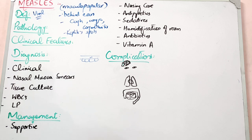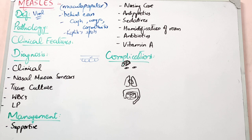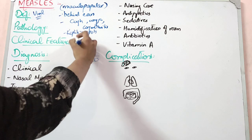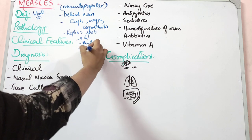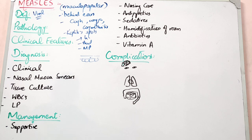If you look at the clinical features, there are three stages. First is the incubation period with no features. Second is the prodromal stage — fever begins, cough, eyes get red. Third is the maculopapular rash stage. Remember the key things: rash starts behind the ears, Koplik's spots appear in the prodromal stage, then the maculopapular rash follows.